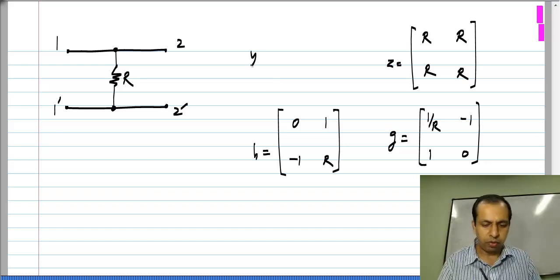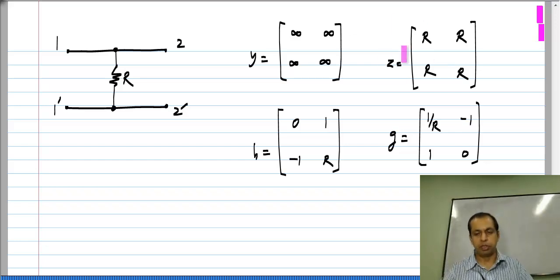But if you try to calculate the Y parameters, they turn out to be all infinite. You should have guessed this because this Z parameter matrix has two rows that are identical, so it cannot be inverted and you will get infinities.